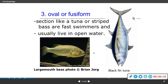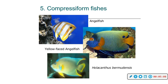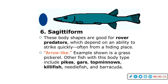Oval or fusiform fish include your tunas and striped bass. These are fast swimmers that normally live further up in the water column, off the bottom. Compressiform fish are like an angelfish — typically your reef fish. They make really quick turns and have quick bursts of speed over short distances, but they don't move much.